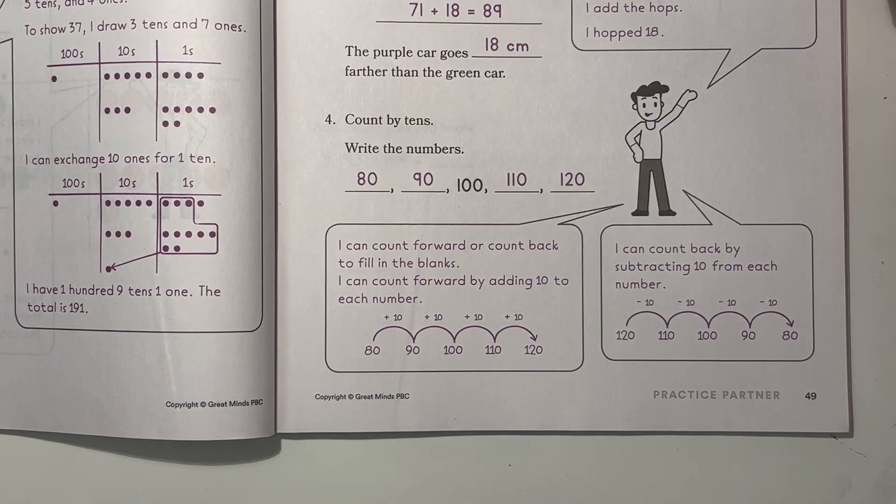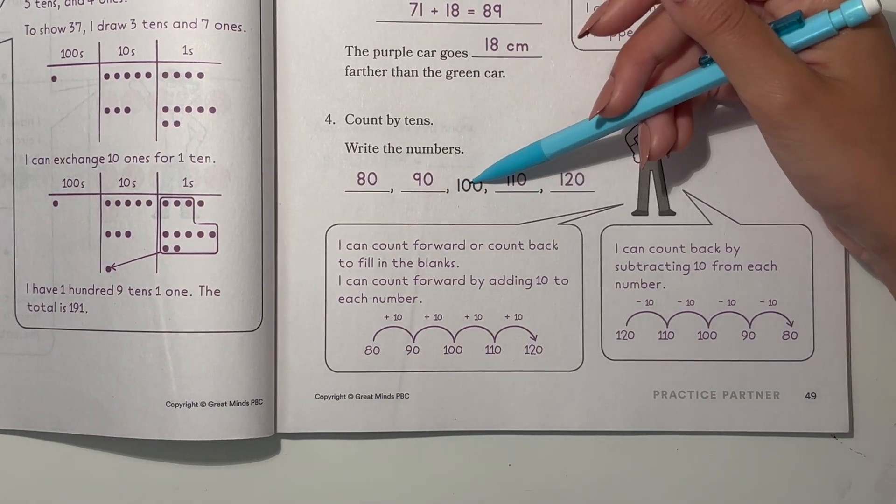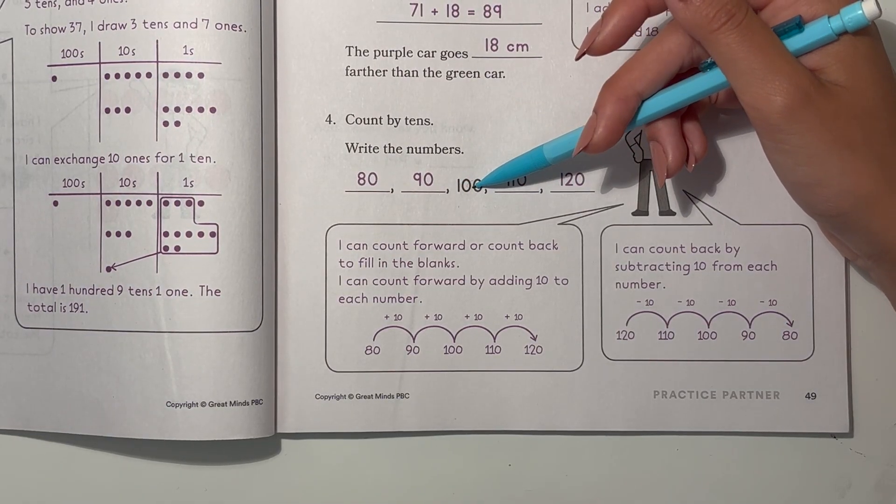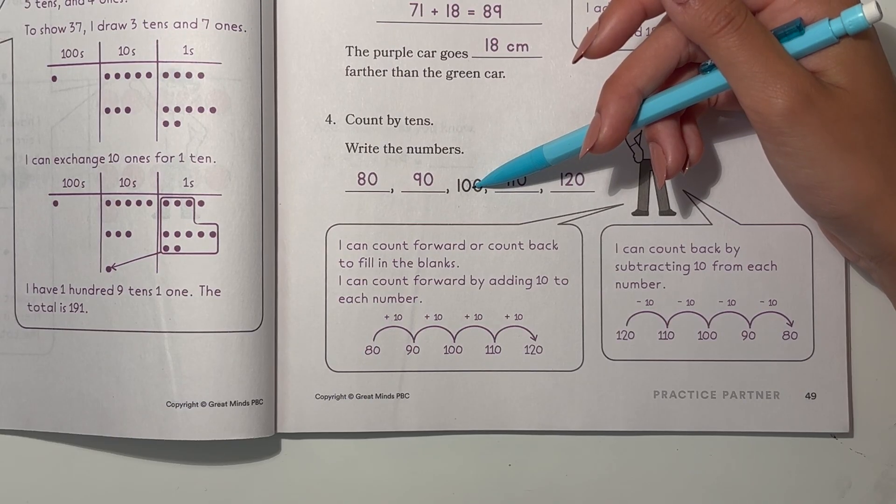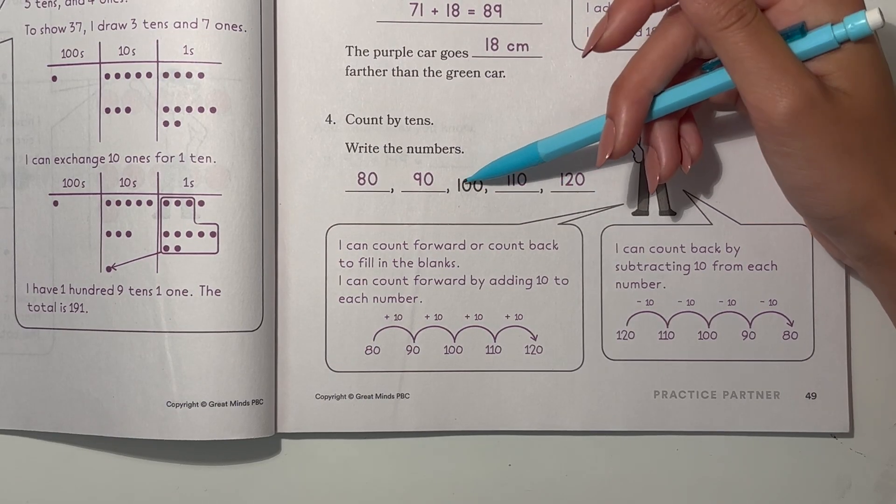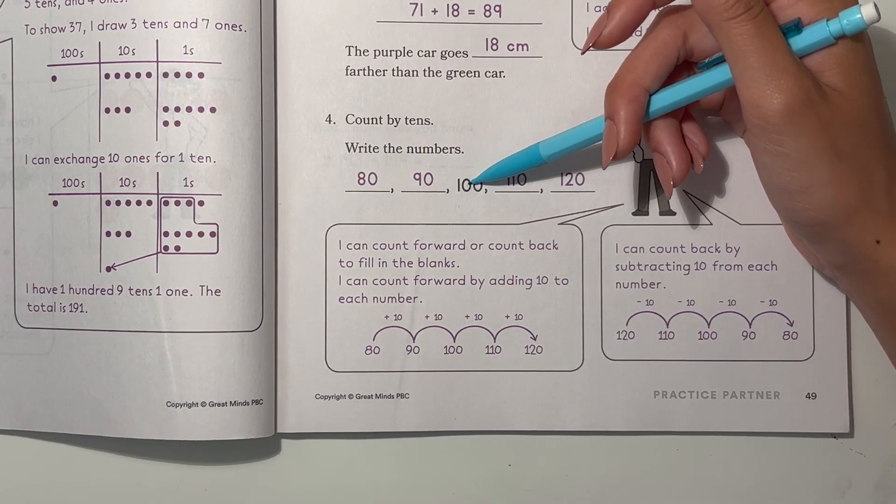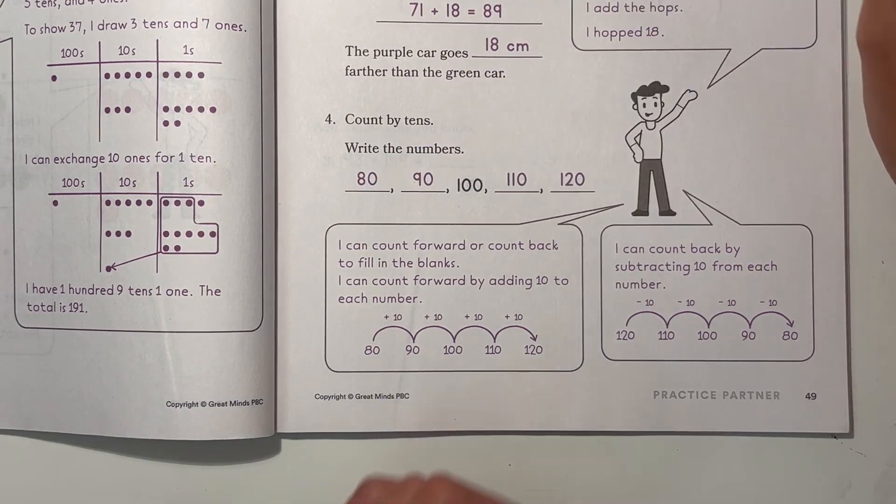Now count by 10s. Write the numbers. We know this is 100. So if we're counting by 10, this is 110, 120. And to find the first one, we just go back from 100. So that's 90 and then 80.